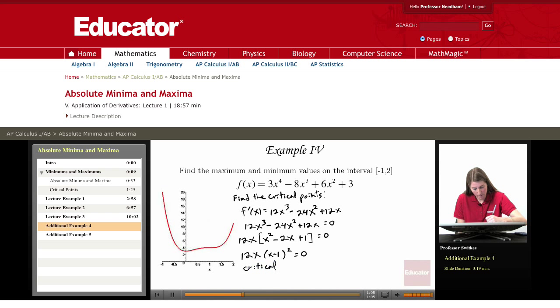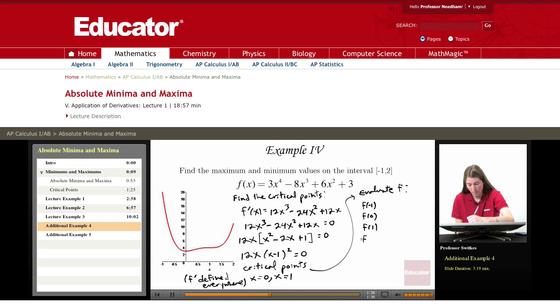f prime is defined everywhere, and so there are no additional critical points due to f prime being undefined somewhere. Now we evaluate f at the endpoints and at the critical points, so we need f of negative 1, f of 0, f of 1, and f of 2.